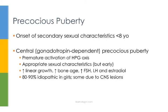With central precocious puberty, around 80-90% of patients have idiopathic causes if they're female. This same percentage does not apply to men. The remaining percentage in females is often due to CNS lesions, such as hypothalamic hamartomas.